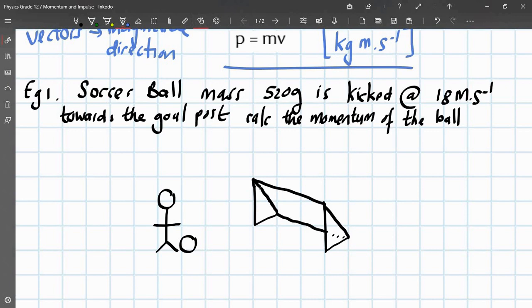So, what are we given? Let's write down what we're given. First, mass of the ball. Mass is equal to 520 grams. But remember, we need to get it into SI units. So, divide by 1000 to get 0.52 kilograms.